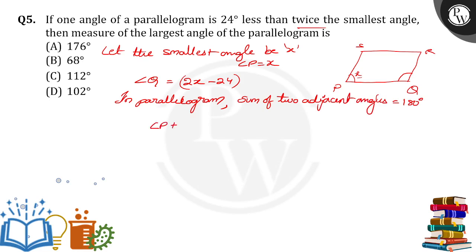So angle P plus angle Q is equal to 180, then X plus 2X minus 24 is equal to 180. So X plus 2X is 3X, which equals 180 plus 24.